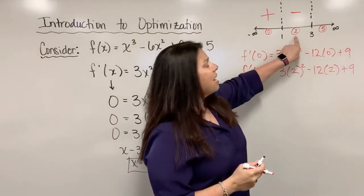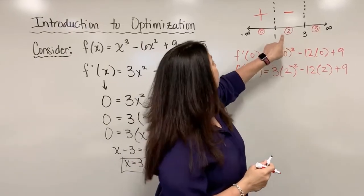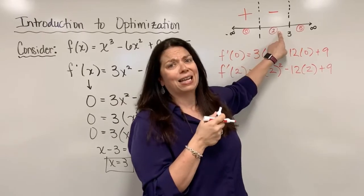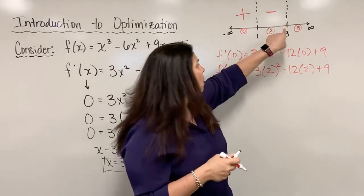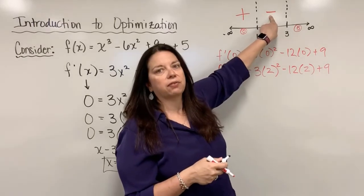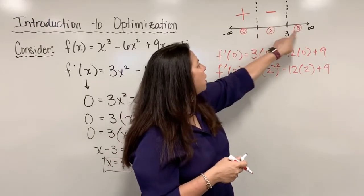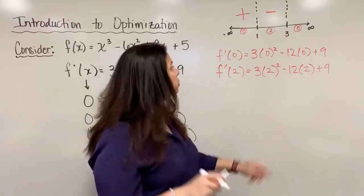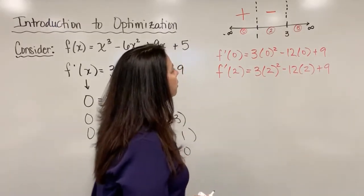And believe it or not, if you had picked 1.5, which is also in this interval, or 2.99, which is also in this interval, no matter what value you pick between 1 and 3, you're guaranteed to get that negative here. So these test values are merely just values that you are free to pick so long as they're in that interval.